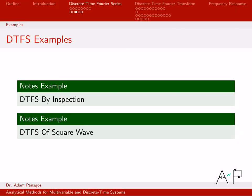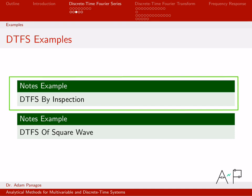Let's work another example of a discrete-time Fourier series of a signal. Let's go back to the inspection technique. In this particular problem, we'll just use our trig and Euler identities to write the signal as a weighted combination of complex exponentials, then collect terms and pick off the DTFS coefficients. Let's go ahead and work this example.